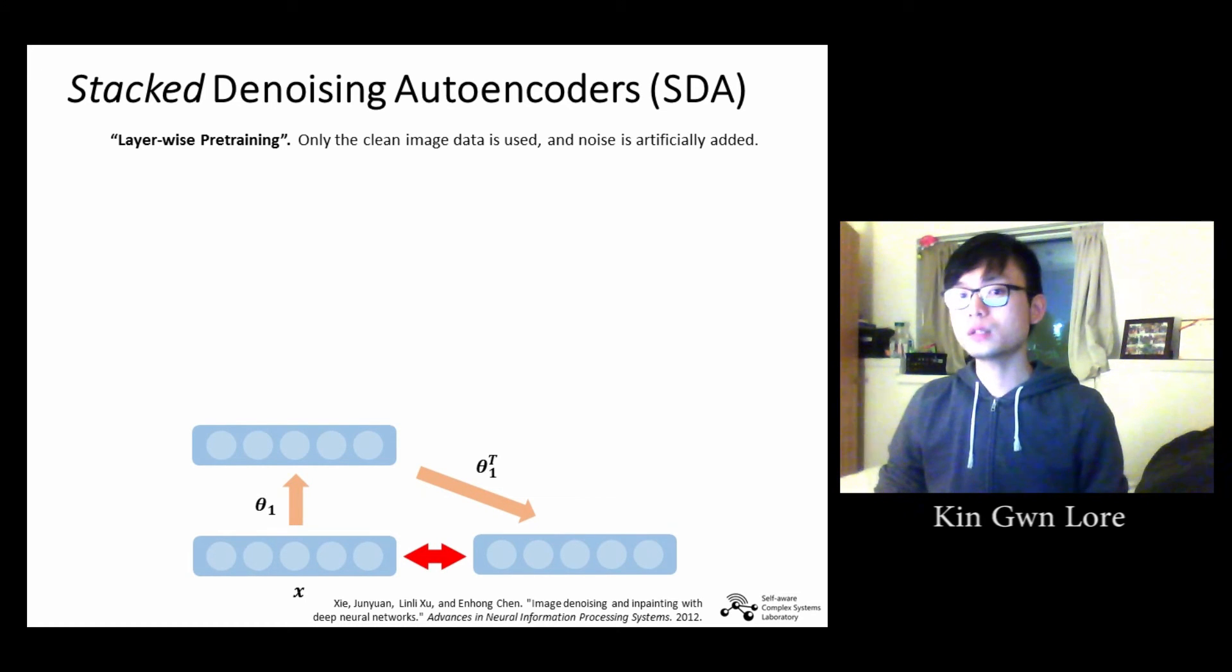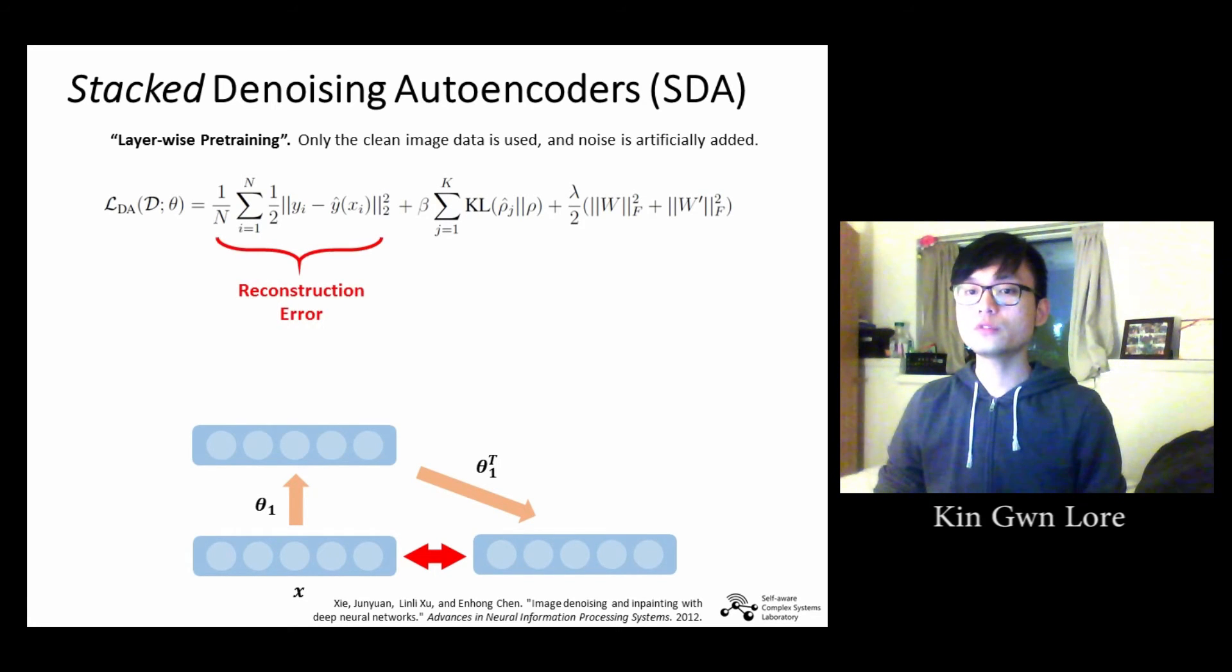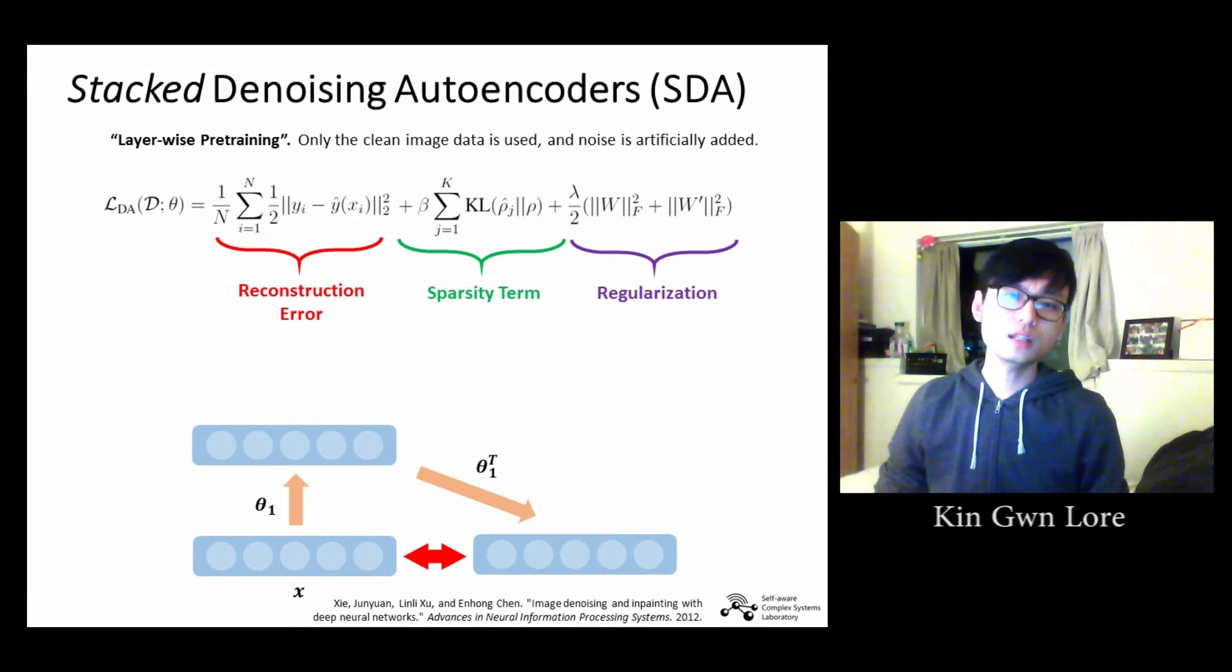During training, the loss that we are trying to minimize can be represented by this equation, which is the sum of the reconstruction error, the sparsity term, and the regularization term. Reconstruction error is simply the mean squared error between the reconstruction and the input. The sparsity term forces most of the hidden layer weights to be zero, whereas the regularization term forces the hidden layer weights to be small. Both the sparsity term and regularization are measures to combat the problem of overfitting and to ensure that the model generalizes the data well.